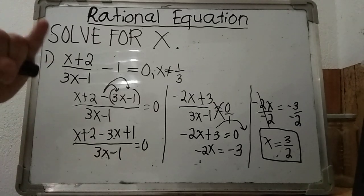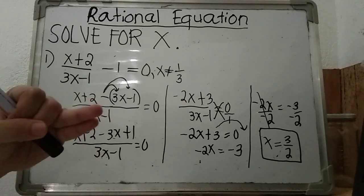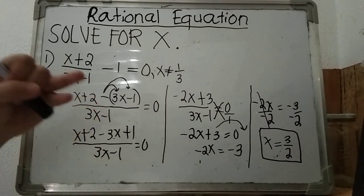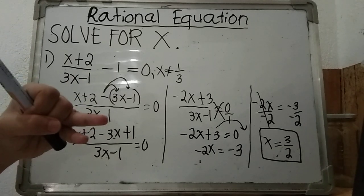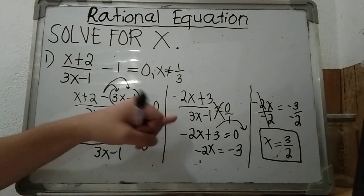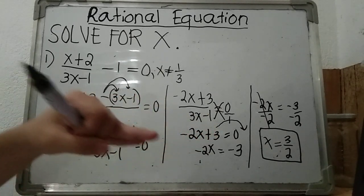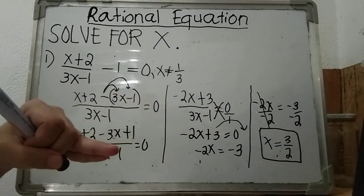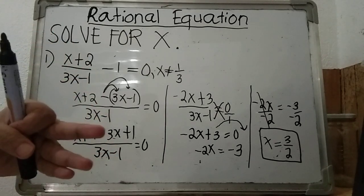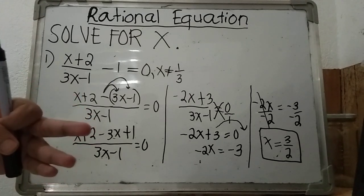The first way was by using cross multiplication. The second way was by employing the process of LCD and then using cross multiplication afterward — and we found 3 halves as our x value. But there is actually a third way: by using the least common multiple, or LCM.